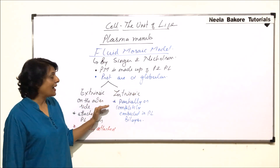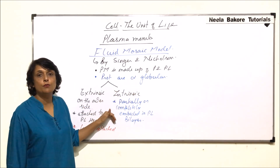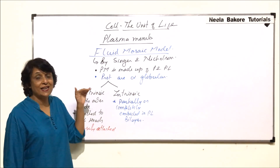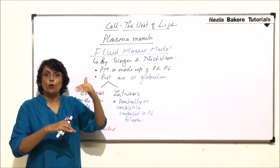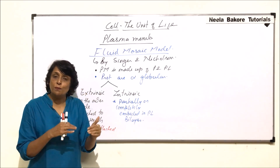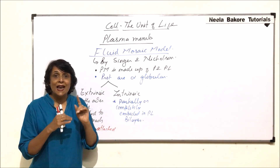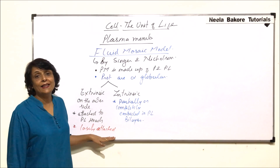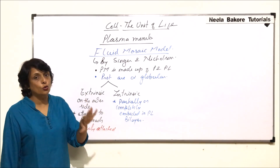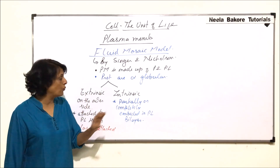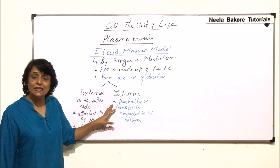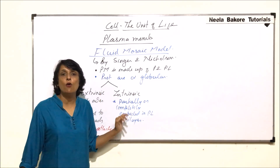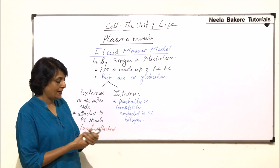The additional interpretation given was that extrinsic proteins are present on both sides of the phospholipid bilayer and are attached to the phospholipid heads, with a loose attachment. Intrinsic proteins are embedded — they could be partially embedded or completely embedded in the bilayer.